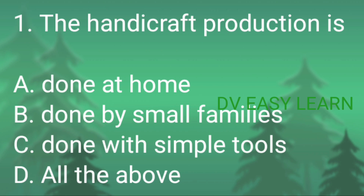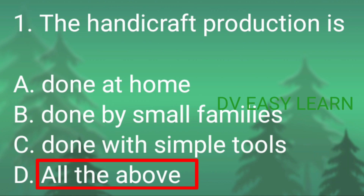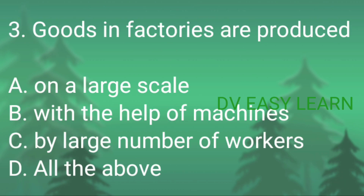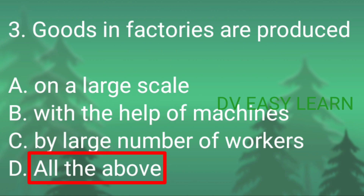First question: the handcraft production is — correct answer: all the above — done at home, done by small families, done with simple tools. Second question: the number of paper mills in Telangana is — correct answer: 2.